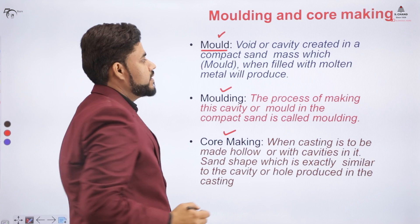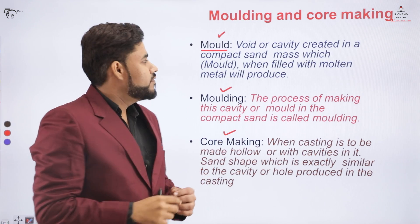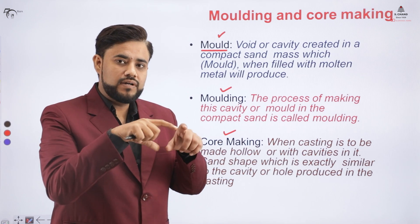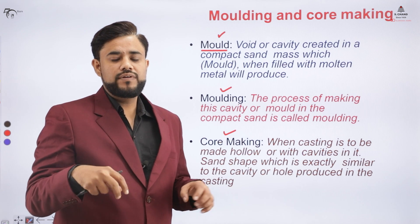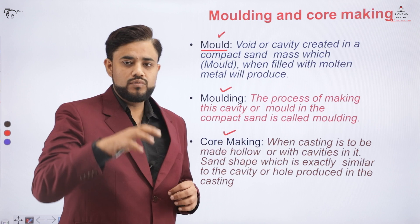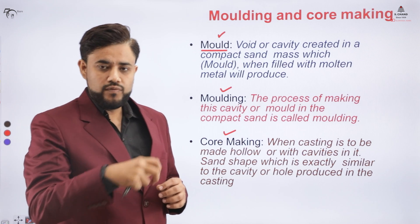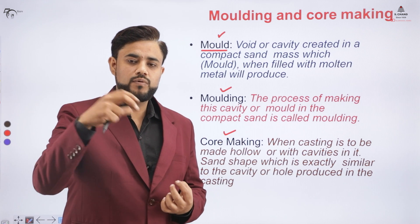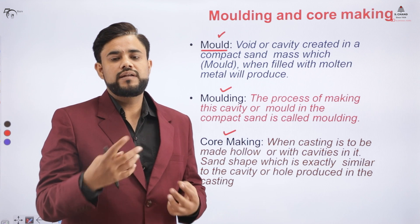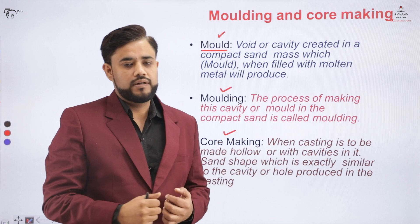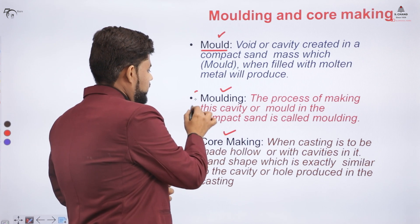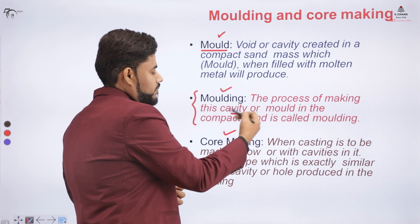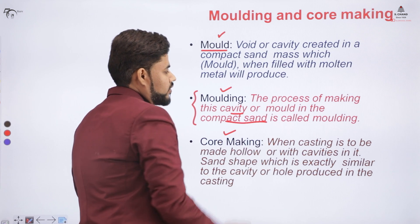What is a mould? A mould is basically a void or a cavity which is created in the sand with the help of a pattern. We place the pattern in the sand, and when we remove it we get the cavity — which is the replica of the pattern — and whenever we pour metal into that cavity we get the final product. Moulding is the process of making that cavity from the pattern in compacted sand.